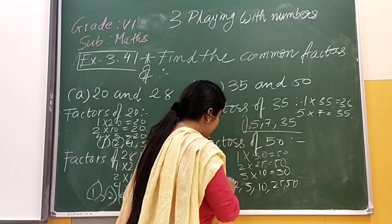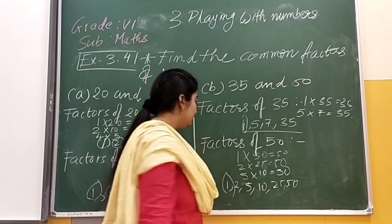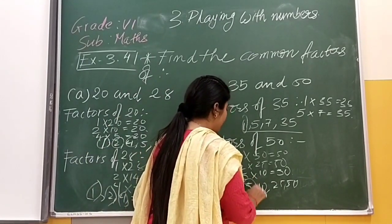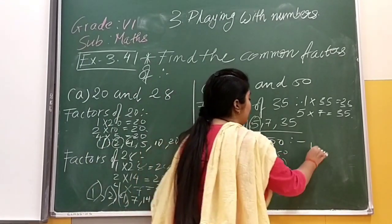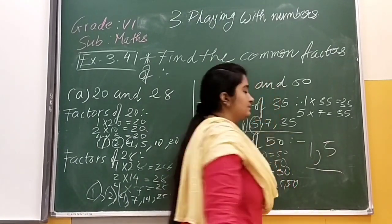1 which is shown here. Here we have 1. And also we can see that 5. 5. Here we can see both of them. Common factors are 1 and 5. That is our answer.